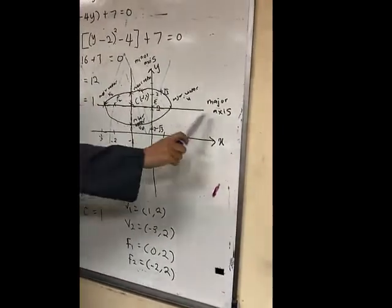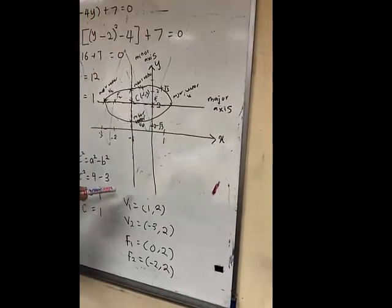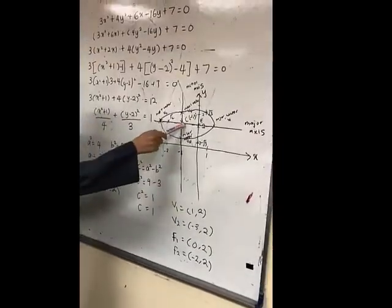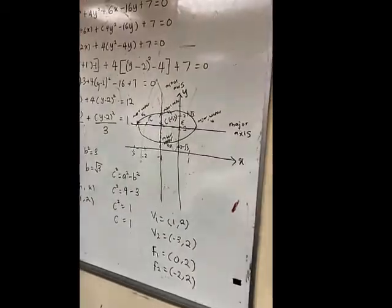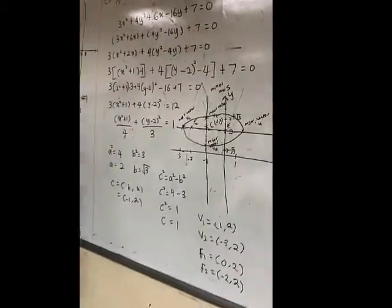So here is the major axis and here is the minor axis. Then the center is (-1, 2).